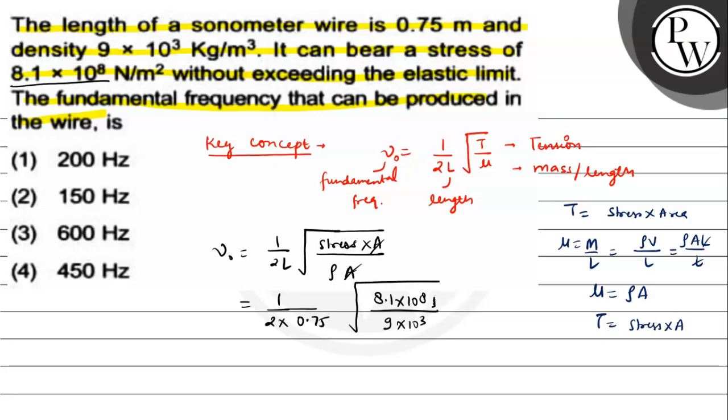Now putting this value, you will get the value as 1 upon 1.5 square root 9. Then solving this, we get 10 to the power 5. Then 0.9 can be written as 9 into 10 to the power 4, which becomes 3 into 10 to the power 2. Then solving 1.5, this becomes 2, meaning the value is 200 hertz. This is our fundamental frequency value. So you get 200 hertz. Your first option will be correct. I hope you understood well, best of luck.